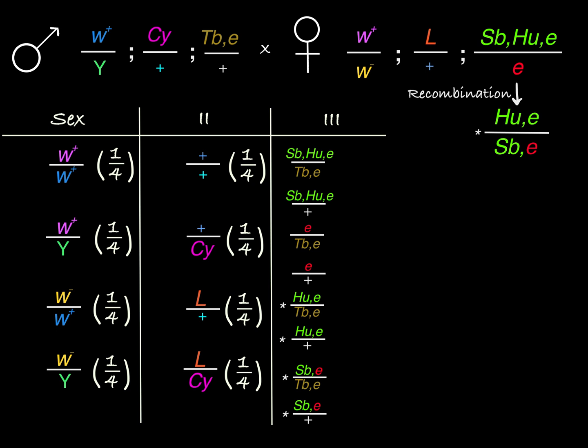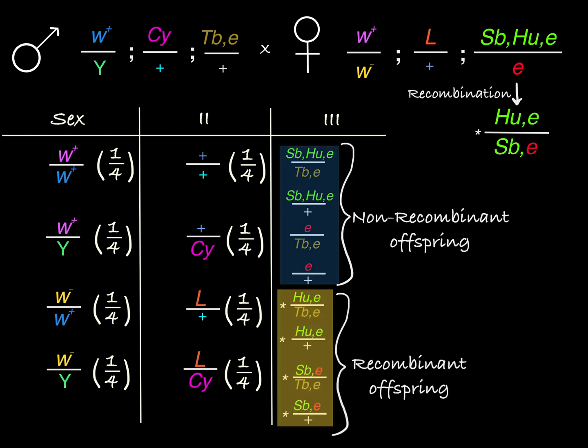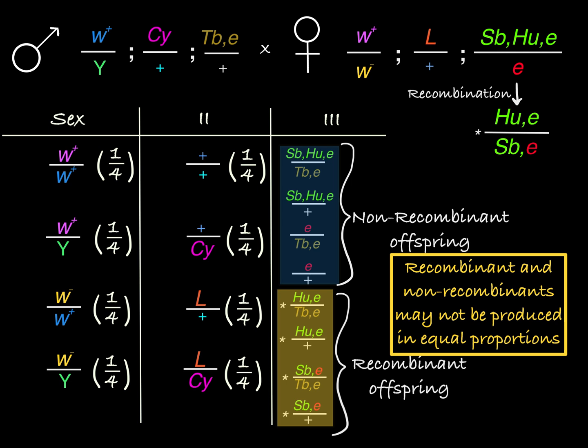One thing to keep in mind is that recombinant chromosomes and non-recombinant chromosomes may not be passed on in equal proportions. Without knowing the recombination frequency between two genes, you can't determine the proportion of offspring that will have each of these different genotypes. You can say that non-recombinants are expected to occur in roughly equal proportions, and recombinants are expected to occur in roughly equal proportions. However, if the linked genes rarely recombine, then the recombinant offspring genotypes will be much more rare than the non-recombinant offspring genotypes.